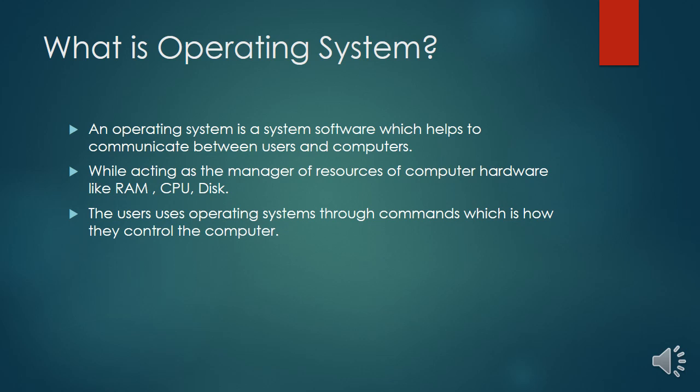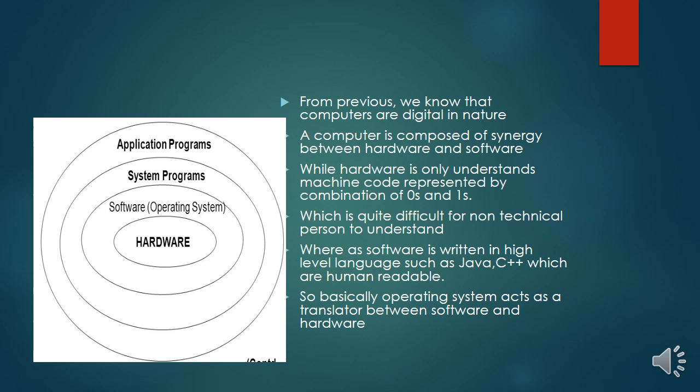The operating system is also sometimes used to manage the system automatically, like in servers — how a server is being managed and how files are being transferred. From our previous knowledge we know that a computer is a digital machine composed of hardware and software, and the synergy between hardware and software helps the user control the various aspects of the computer system.